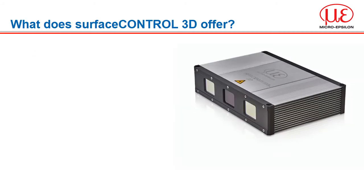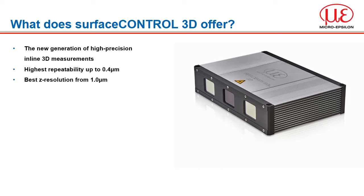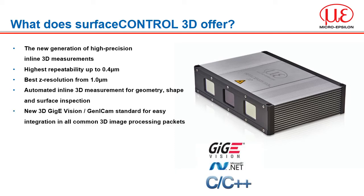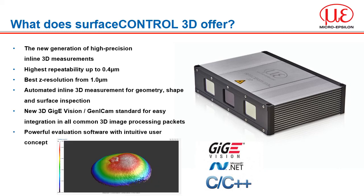Surface Control represents the next evolution for MicroEpsilon in terms of 3D surface capture. It continues the trend for ever higher accuracy and measurement capability and fulfils the need for high-precision capture of smaller targets. The system is capturing up to 2.2 million 3D points per second and is a fully integrated industrial sensor with passive cooling. The sensor is designed for in-line data capture and can be used for geometry, shape and surface inspection. The 3D data comes directly from the sensor and supports the new 3D GigE Vision and Genicam standards, so you have easy integration into third-party software, together with our own powerful evaluation software and a comprehensive SDK.